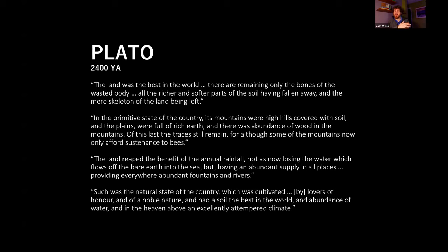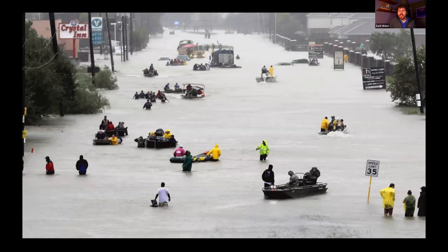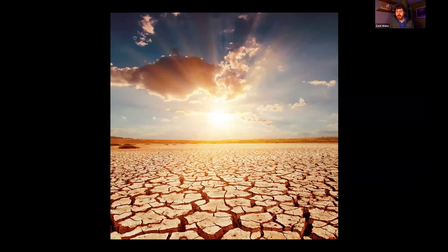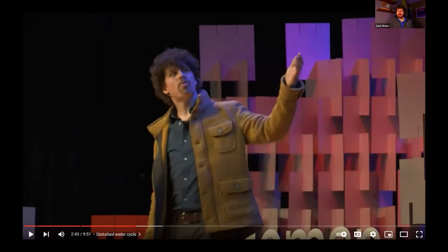You can show people how a landscape receives rain in the natural state versus the man-made state, how this creates cycles of flood, drought, and fire. You can look at this historically — Plato, more than 2,000 years ago, was talking about land degradation and its impacts on water and climate. There are just these really clear things that you can help people understand about how we're creating these cycles of flood, drought, and fire, and how we've lost 87% of Earth's wetlands and they won't come back on their own.